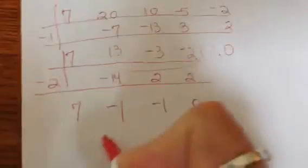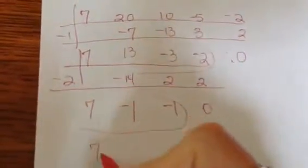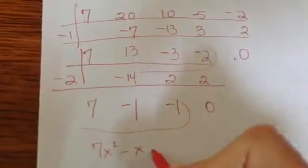Now, notice I'm down to three terms. That's what I want. Because notice that's 7x squared minus x minus 1. Now, I can either factor it, which obviously this one's not going to factor, or I can use the quadratic formula.